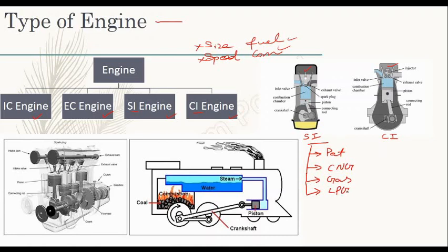This is a spark block, this is a transformer with high voltage and pulse signals. There are two different potentials, so this is a voltage electron jump — this is the spark. This is an air-fuel mixture. The other type is CI engine — combustion ignition — and the diesel engine is a CI engine.